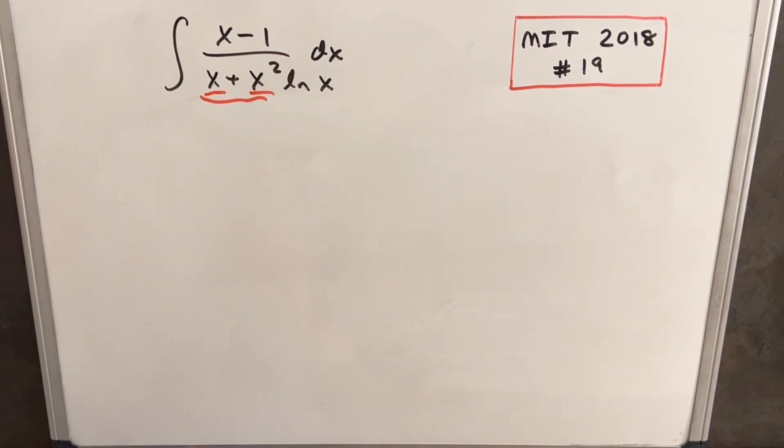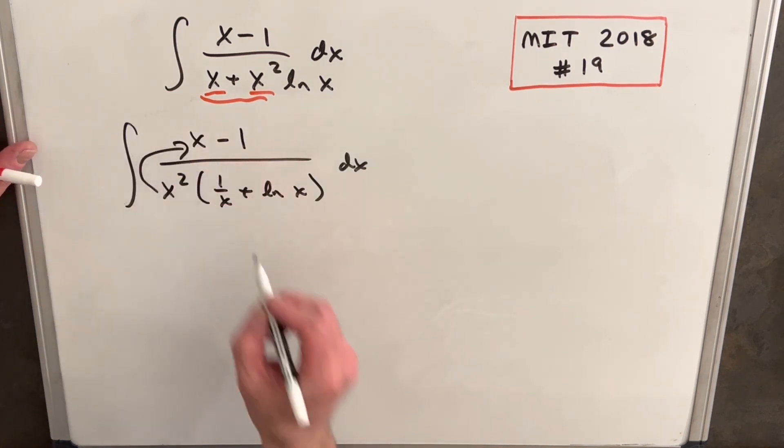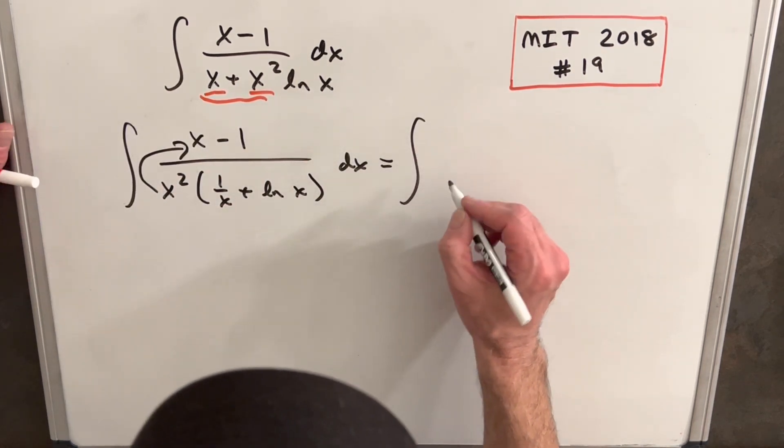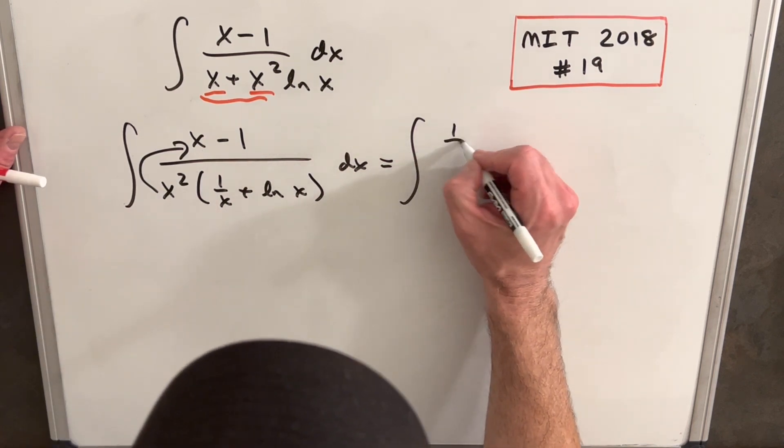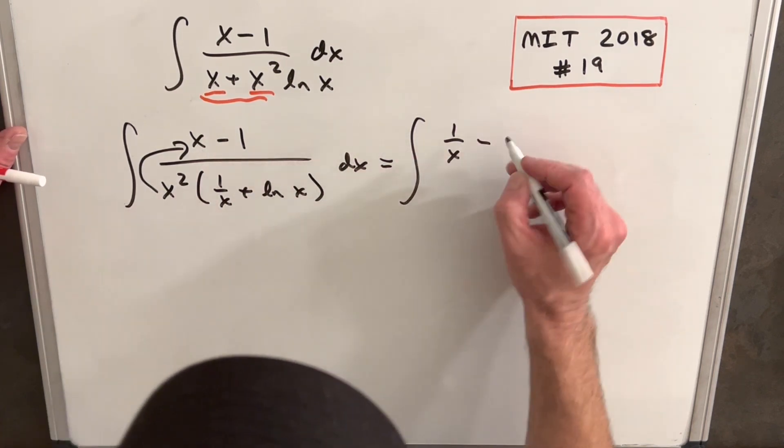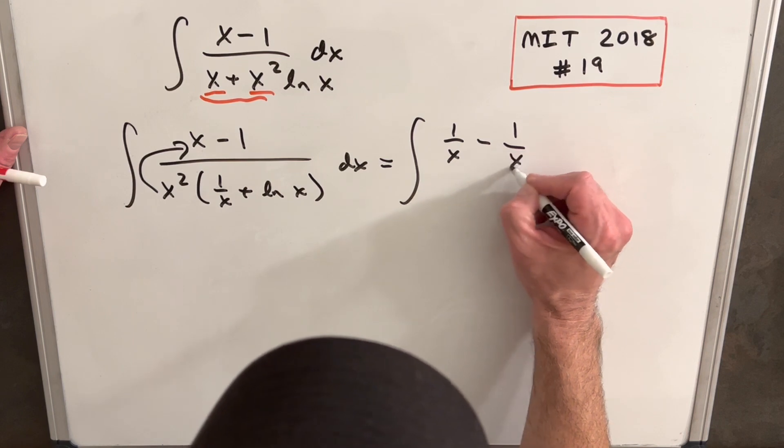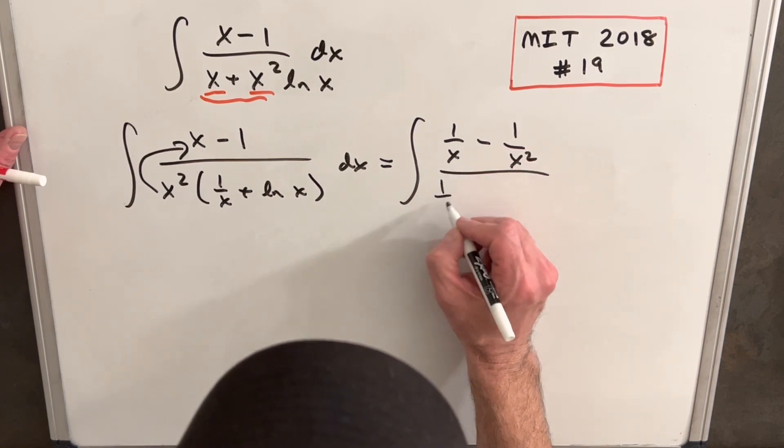From here we'll do the same thing and divide this x² into the numerator. The first term is going to be 1/x, the second term is going to be minus 1/x². So we have 1/x + ln(x). I think you see where this is going.